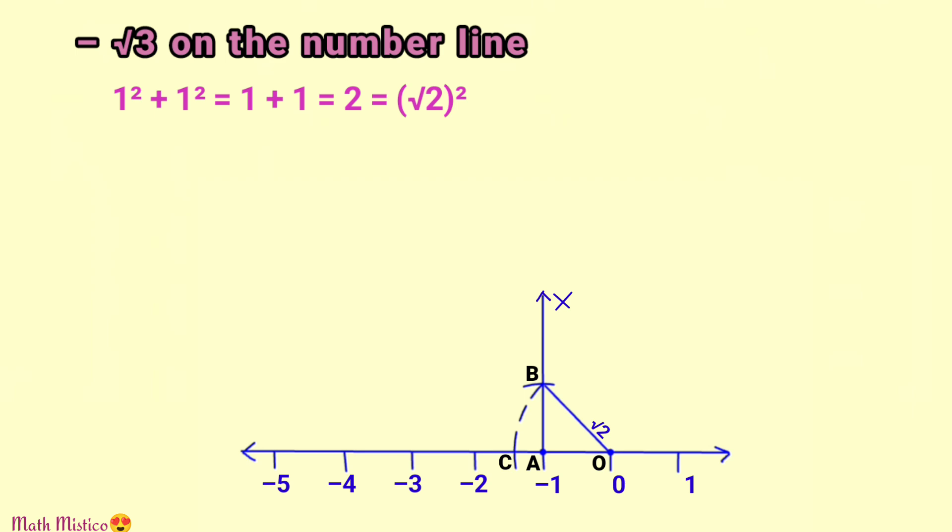Now that minus √2 is ready, we can further use it to represent minus √3. Just like the steps we followed for √3, (√2)² + 1² = 2 + 1 = 3 = (√3)². So now we have to construct a triangle with one side √2 and other side 1. We already have the length √2 on the number line, that is OC.